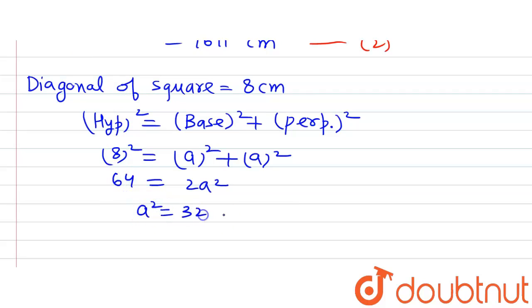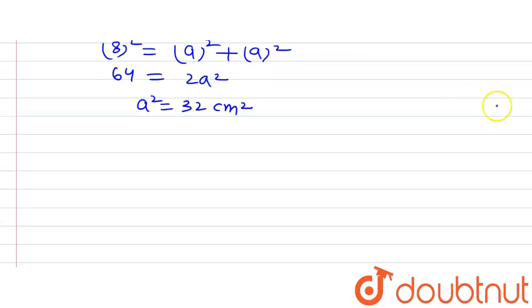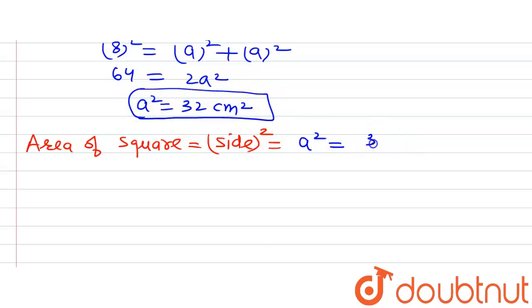We know that area of square equals side². Now side of the square we have assumed to be a, so that means a². The value of a² is 32 cm².